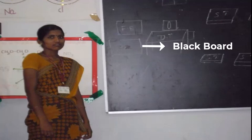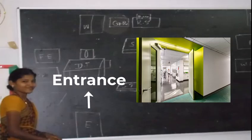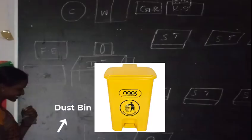Another student wrote FC which means fume cupboards. Next student came and wrote E on the board which means entrance, the main way which we enter into the lab. Next student wrote DB which means dustbin.